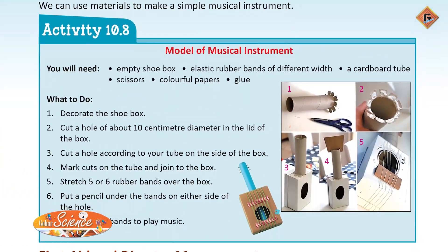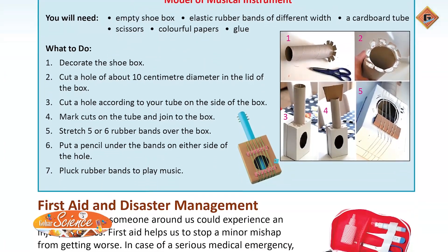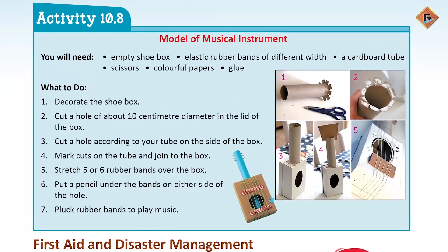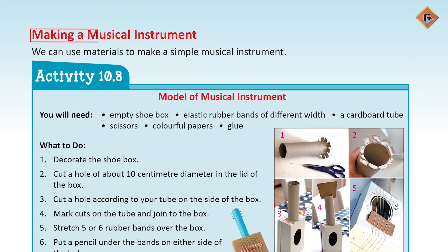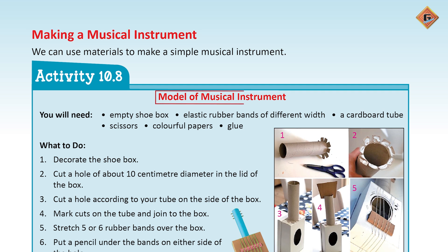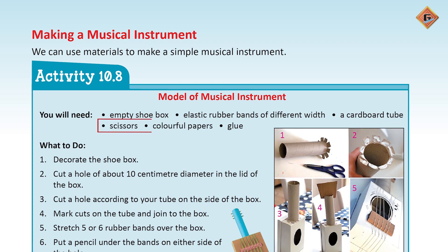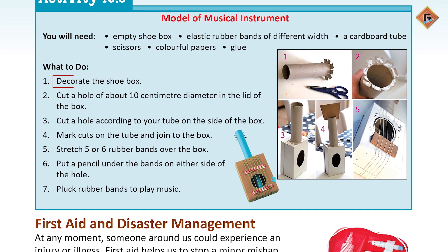Aaj hum musical instruments bhi banaenge. Chalein apni book ka page number 125 open kar lein aur seekhte hain musical instruments ko banana. To start, aapne empty shoe box lena hai, elastic rubber bands leni hain different widths ke, cardboard tube leni hai, scissor leni hai, colorful paper aur glue leni hai.